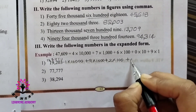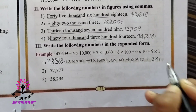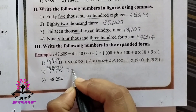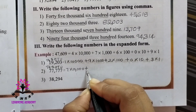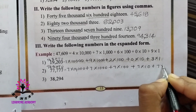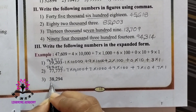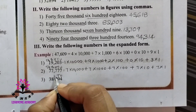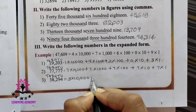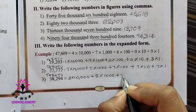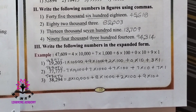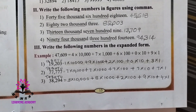For the next number, mark the places: unit, ten, hundred, thousand, ten thousand — 7 × 10,000 + 7 × 1,000 + 7 × 1. Then 38,294: mark the places — 3 × 10,000 + 8 × 1,000 + 2 × 100 + 9 × 10 + 4 × 1.